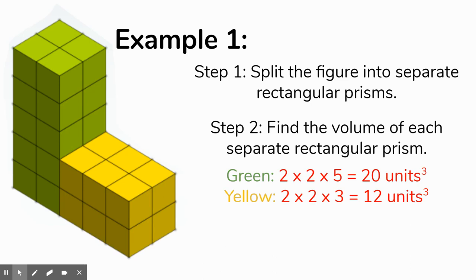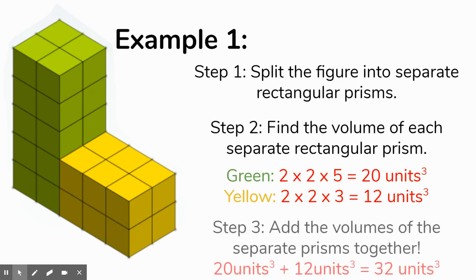For the yellow prism, it has a length of 3, a width of 2, and a height of 2. Multiplying those three numbers gives a volume of 12 cubic units for the yellow prism. Now that we've got the volume of each, the last step is we just add those two volumes together: 20 cubic units plus 12 cubic units gives us the total volume of 32 cubic units for the composite figure.